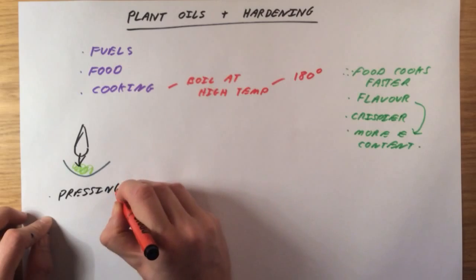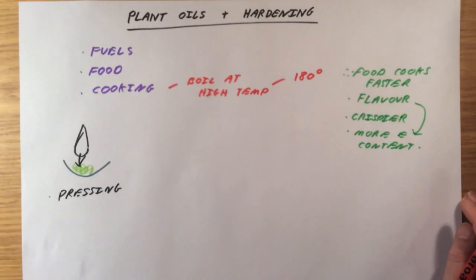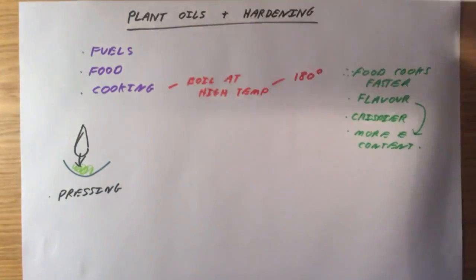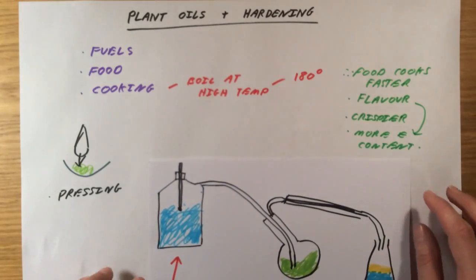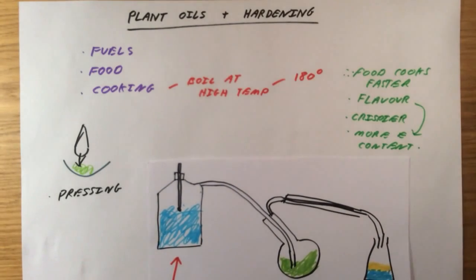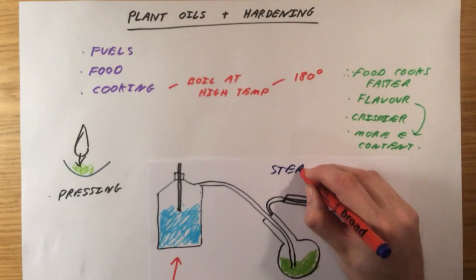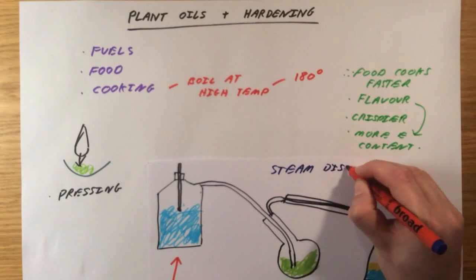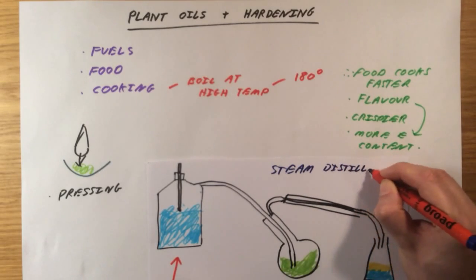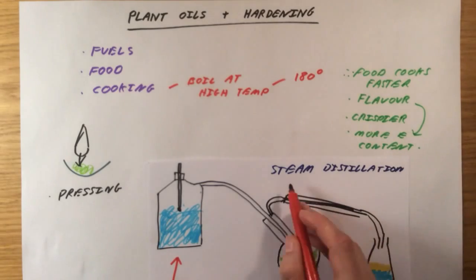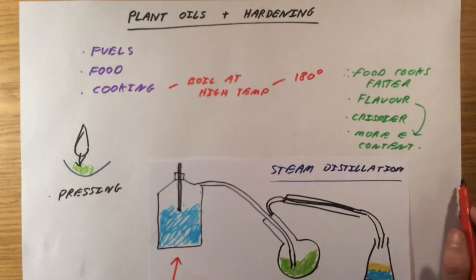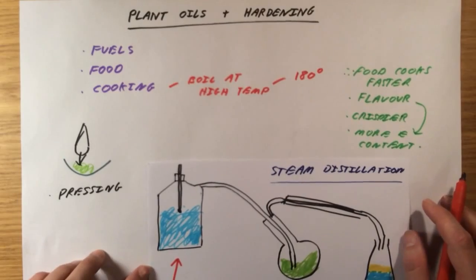But there are other methods too. For example, with lavender oil, we use a process called distillation. Because a lot of these oils are quite sensitive to heat, generally you don't want to heat them directly. So the one we used to use for things like lavender oil was a little bit like this, and this is called steam distillation. And this has come up in the exam before. It apparently gave you enough information to be able to figure it out, but I thought it was quite a tricky question, which is why I'm going through it now.